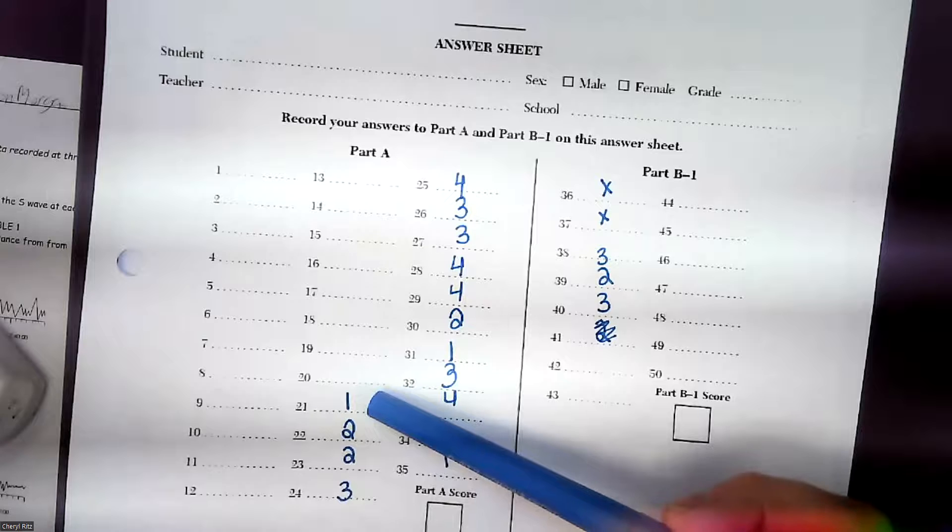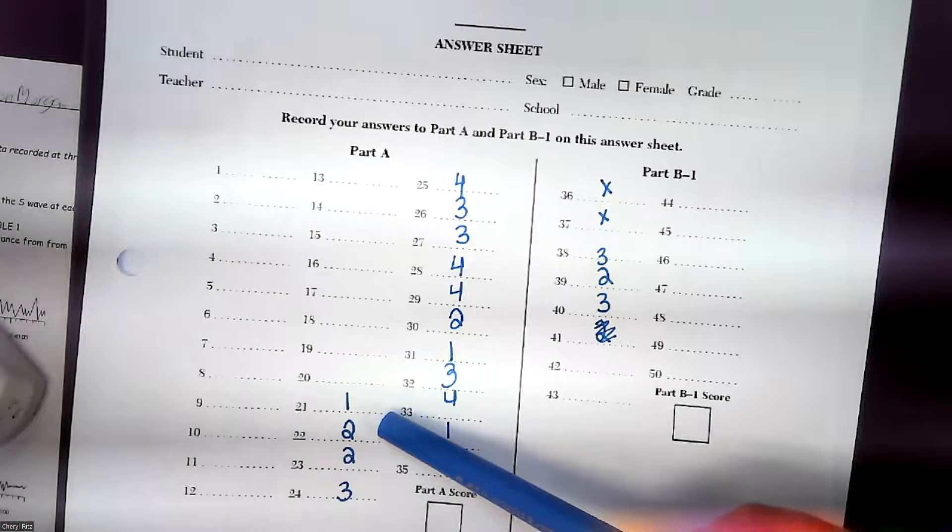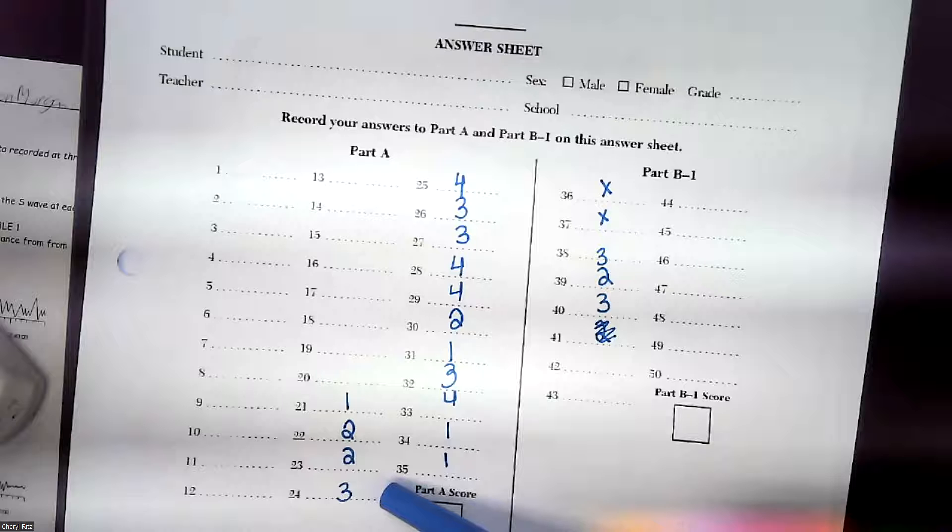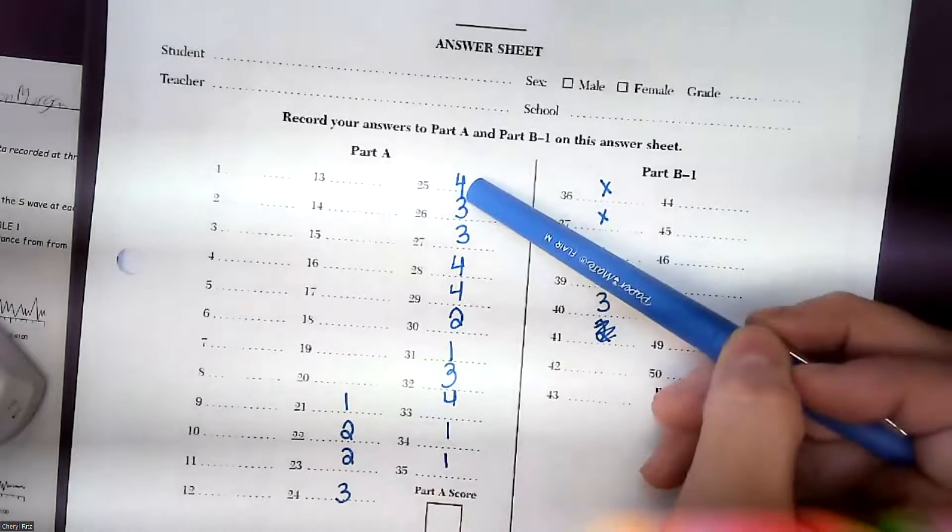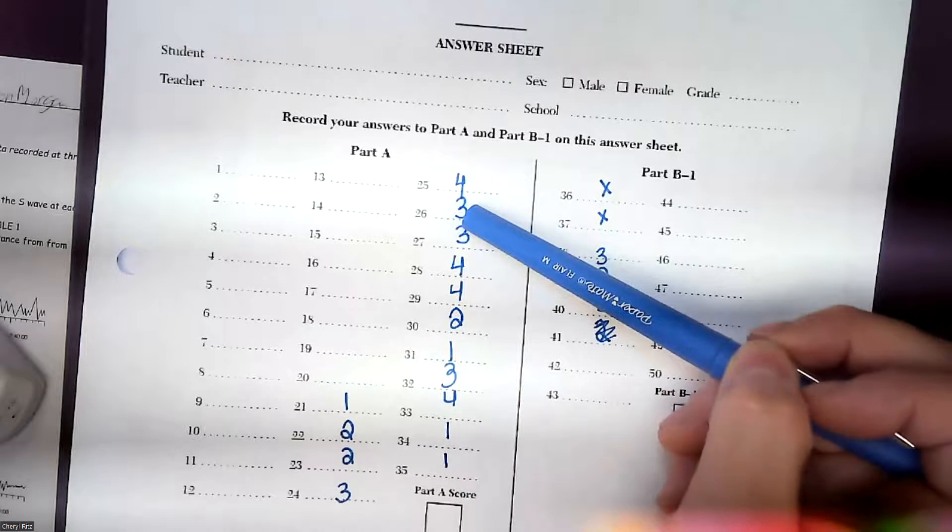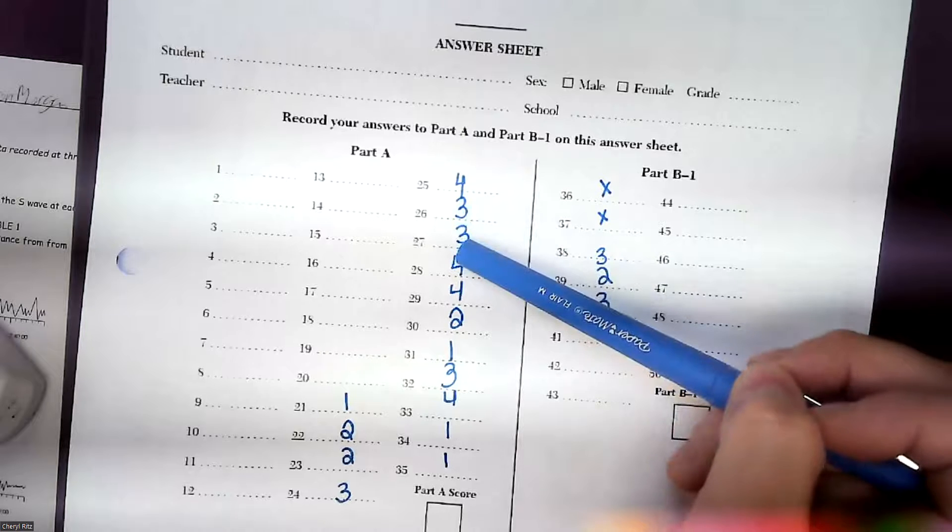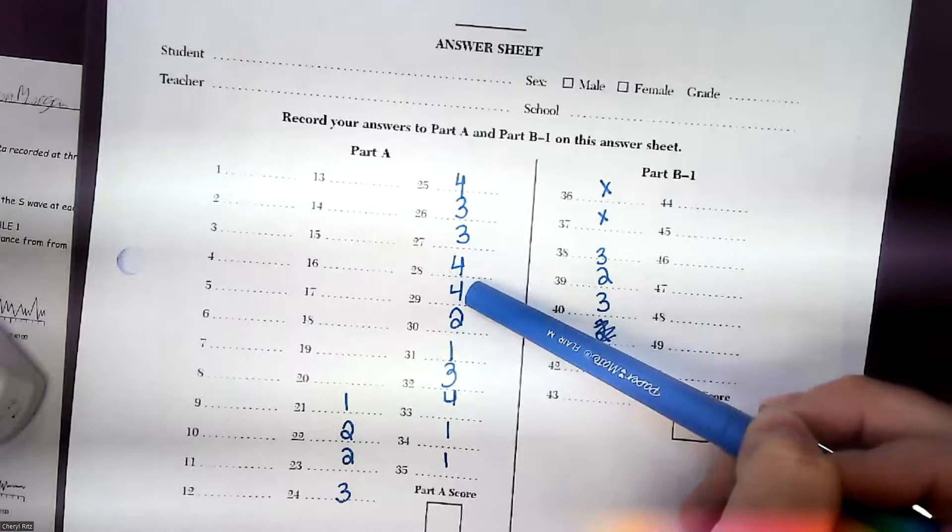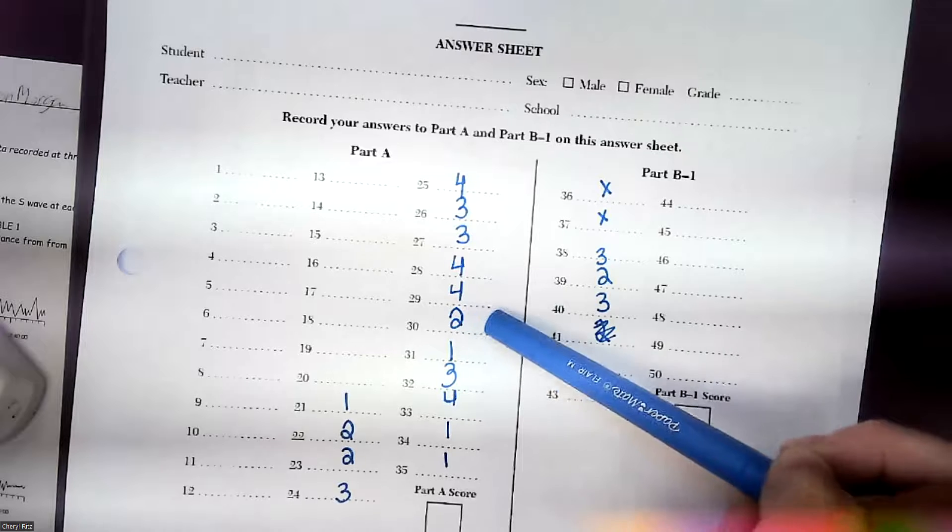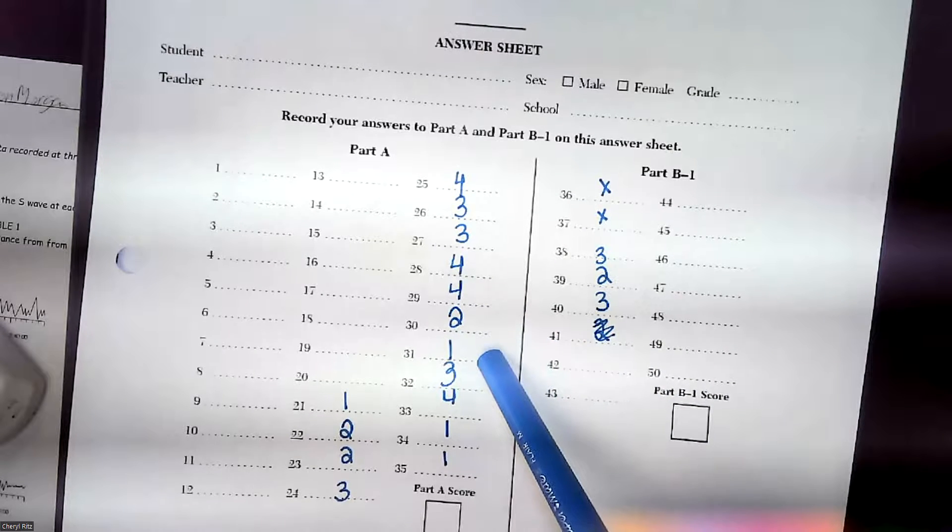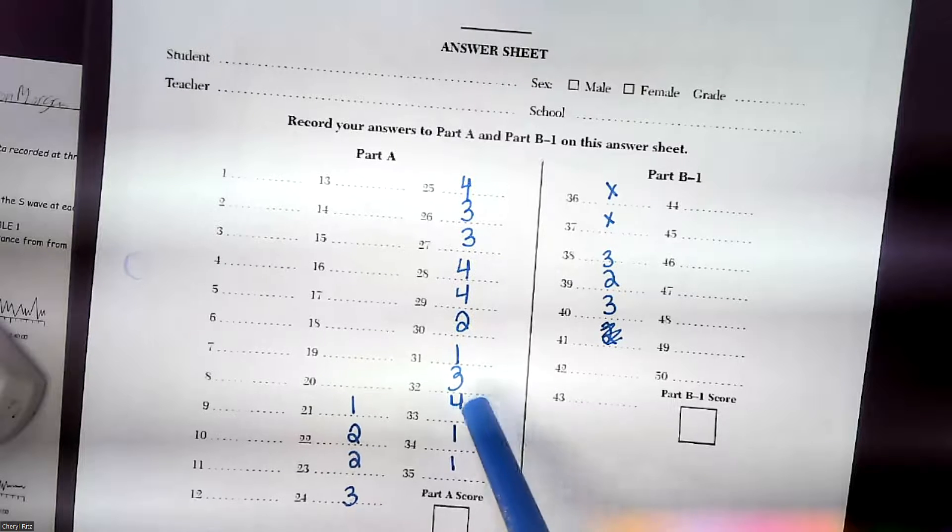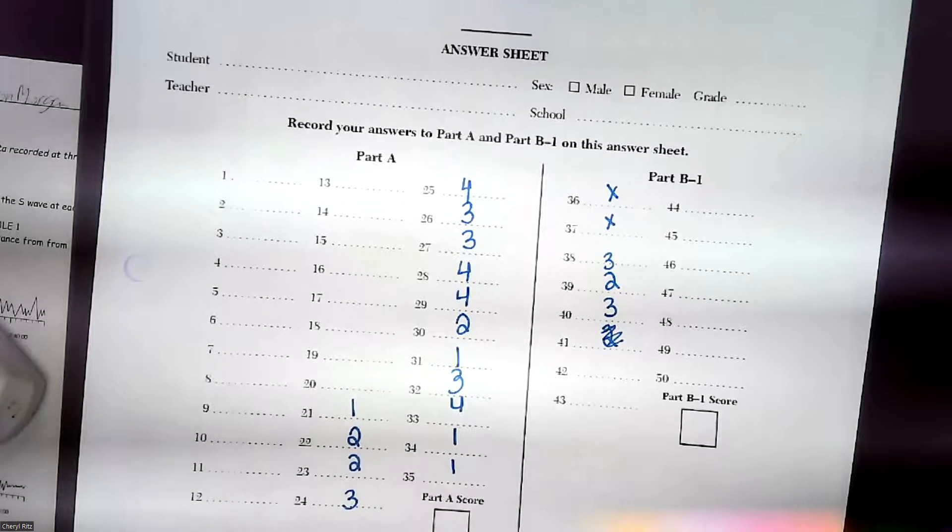So 21 was 1, 22 was 2, 23 was 2, 24 was 3, 25 was 4, 26 was 3, 27 was 3, 28 was 4, 29 was 4, 32 was 31, 31 was 1, 32 was 3, 34 was 4, and 34 and 35 were 1.